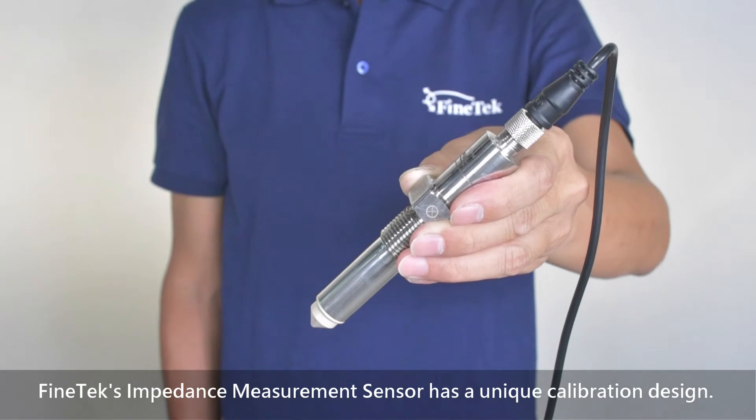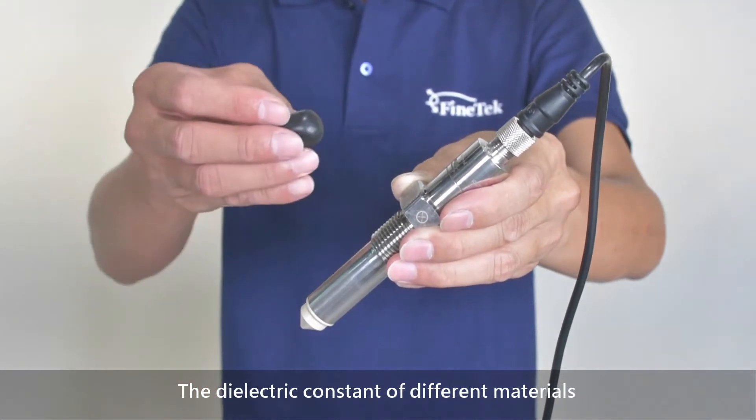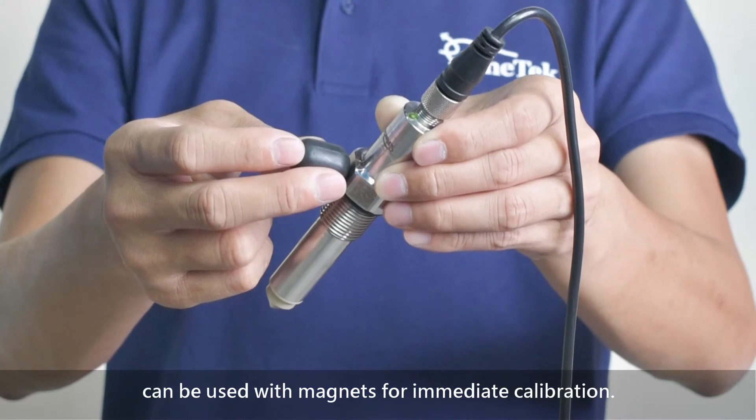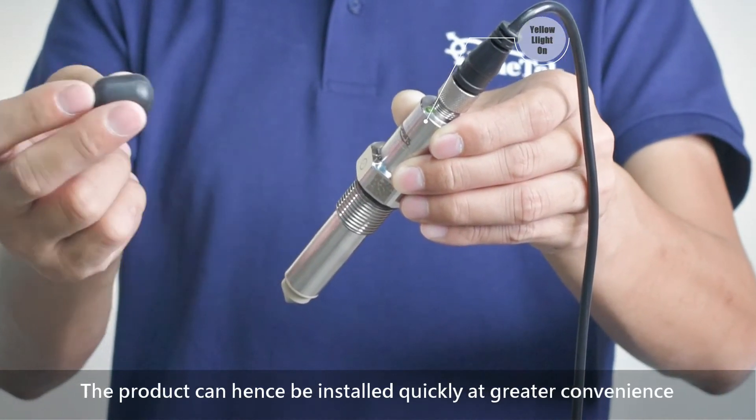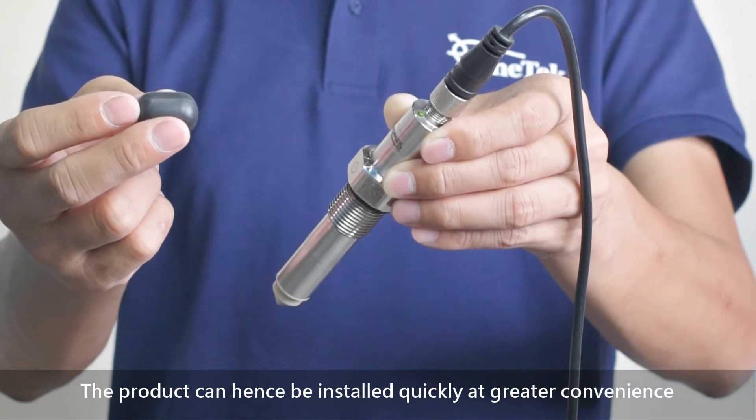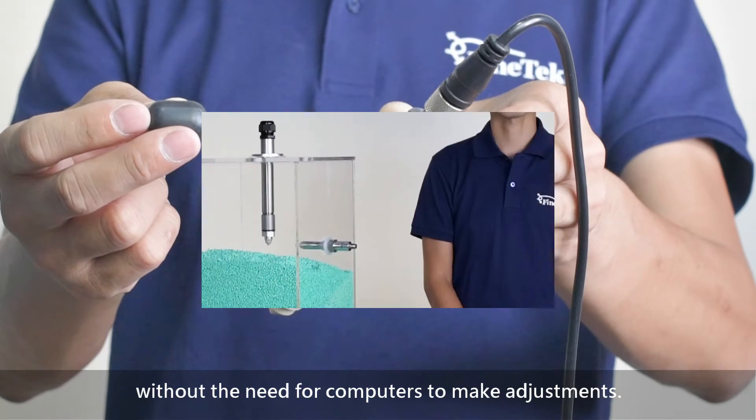FinTech's Impedance Measurement Sensor has a unique calibration design. The dielectric constant of different material can be used with magnets for immediate calibration. The product can be installed quickly at greater convenience without the need for a computer to make adjustments.